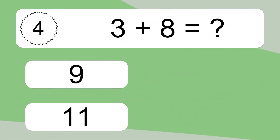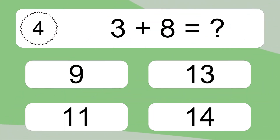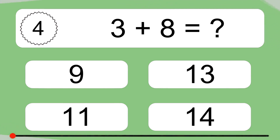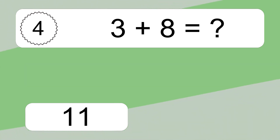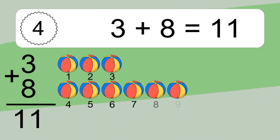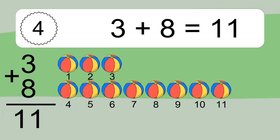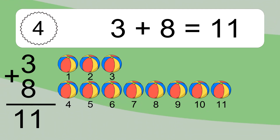3 plus 8 equals what? 3 plus 8 equals 11. Let's count it. 1, 2, 3, 4, 5, 6.